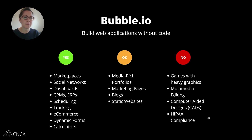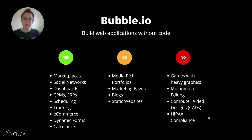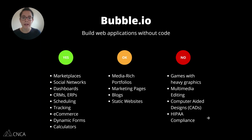CRMs and ERPs are other very common types of functionality that businesses need in order to run properly — being able to manage all of their customers, or have some kind of internal custom flow that takes in all aspects of their business in a streamlined and automated way.